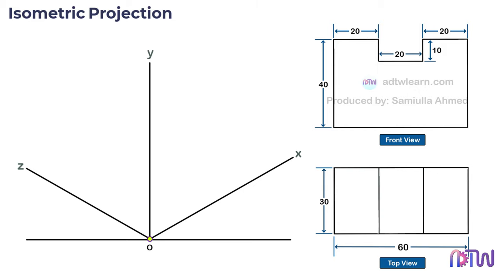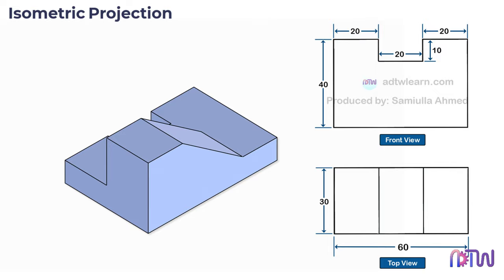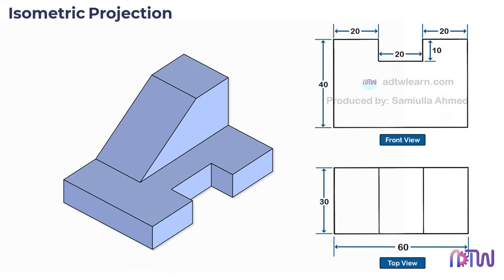Before drawing, an important thing to remember is that when we draw the three-dimensional view of the object, the maximum edges of the object should be visible. For example, if we look at an object from one angle we can see only a few edges, but if we rotate the object and look from another angle we can see more details. Therefore, we need to carefully select whether to draw the front view facing on the XY plane or YZ plane.